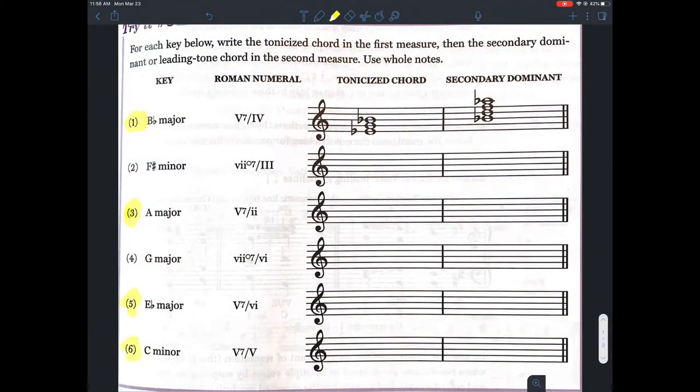Let's start with just the keys and the chords that have secondary dominance, so a V of something else. We look at the tonicized chord first, which is a IV, and the secondary dominant, which is the V7 of IV.